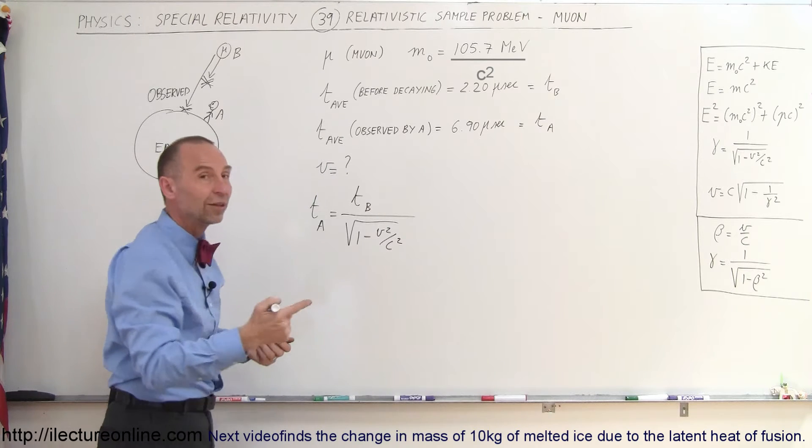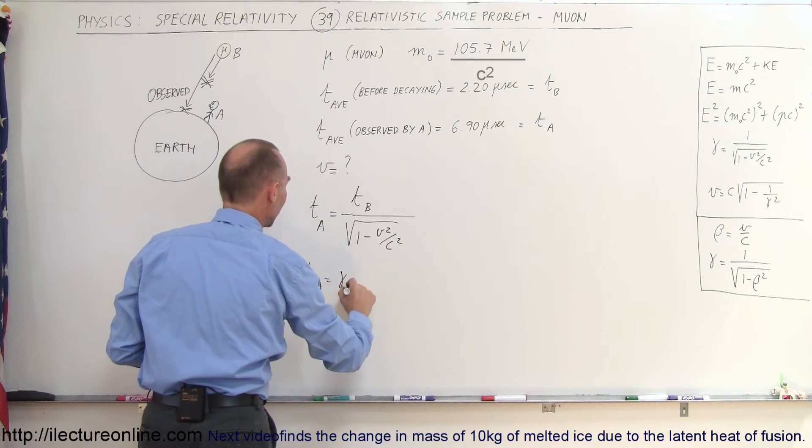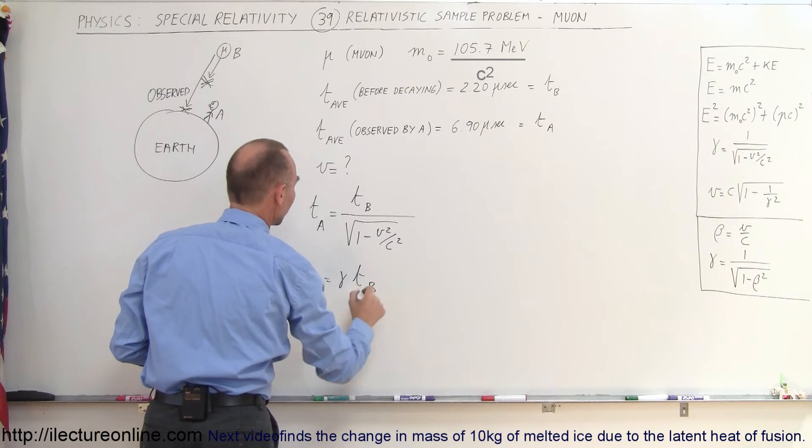Or, by using the Lorentz factor, we can write that the time as observed by A is equal to the Lorentz factor times the time as observed by B.